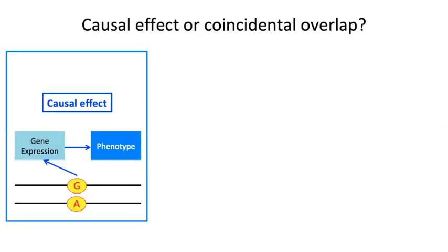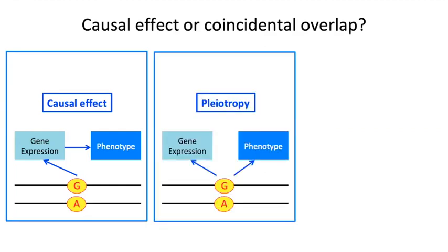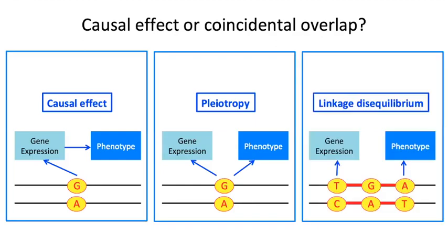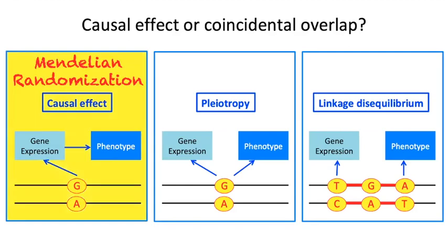When we have these overlapping associations, we can have three different explanations: a scenario of causal effect, where the genetic variant affects gene expression which affects the phenotype; or a scenario of pleiotropy, where the genetic variant independently affects both gene expression and the phenotype; or a scenario of linkage disequilibrium, where the genetic variant is in high LD with two different variants, one affecting gene expression and the other affecting the phenotype. We are interested in the first scenario, and to estimate the causal effect of gene expression on the phenotype, we want to apply Mendelian randomization.